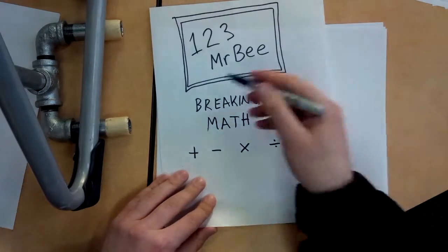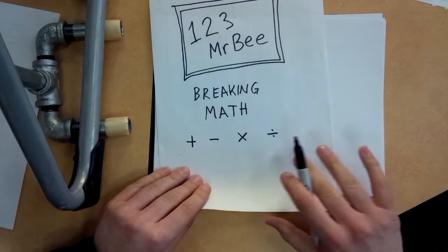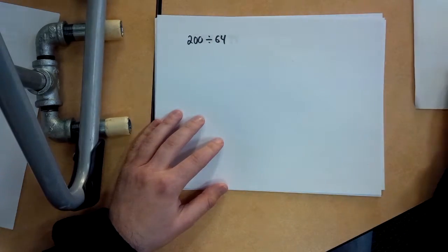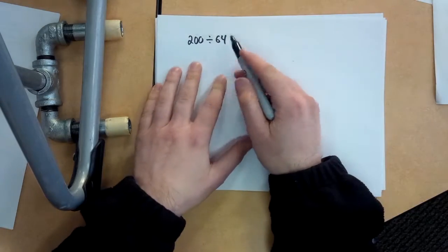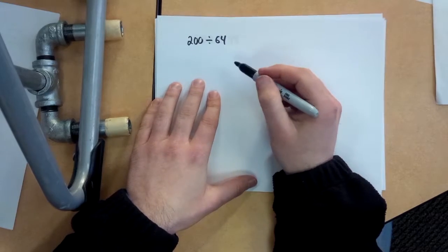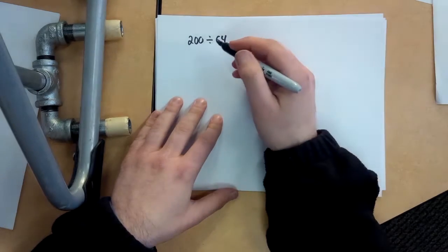Hey everybody, it's 123MrB. We're doing some breaking math practice examples. We are going to do some breakdown division shortcuts, meaning before I start doing the division here, I'm actually going to make some shortcuts to make life a little faster and easier.